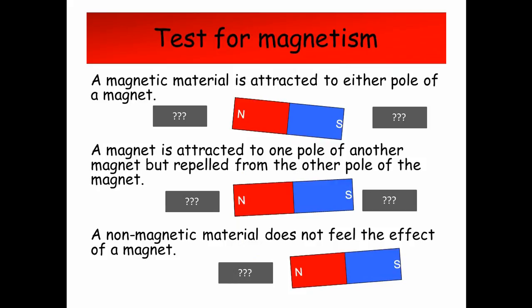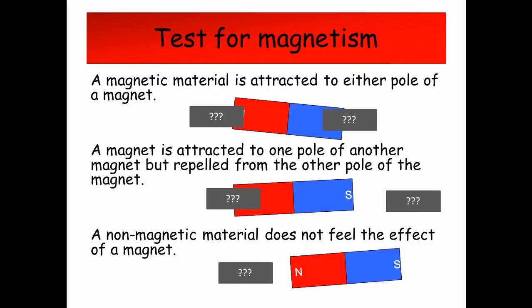The test for magnetism. A magnetic material is attracted to either pole of a magnet. A magnet is attracted to one pole of another magnet, but is repelled from the other pole of the magnet. A non-magnetic material does not feel the effect of a magnet.